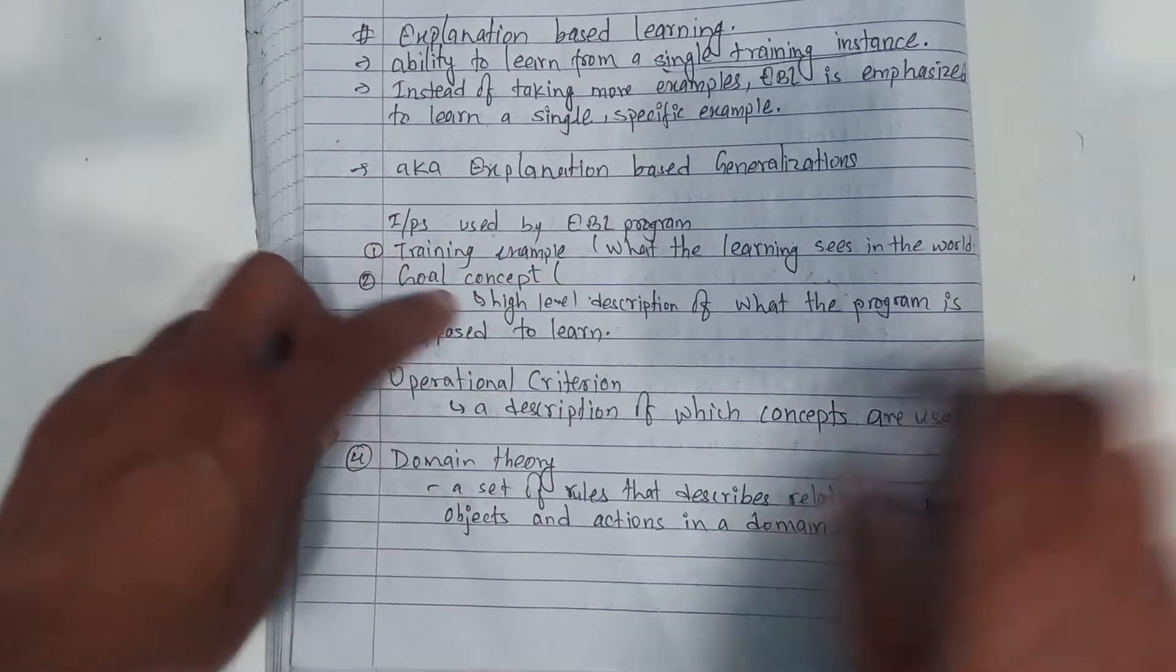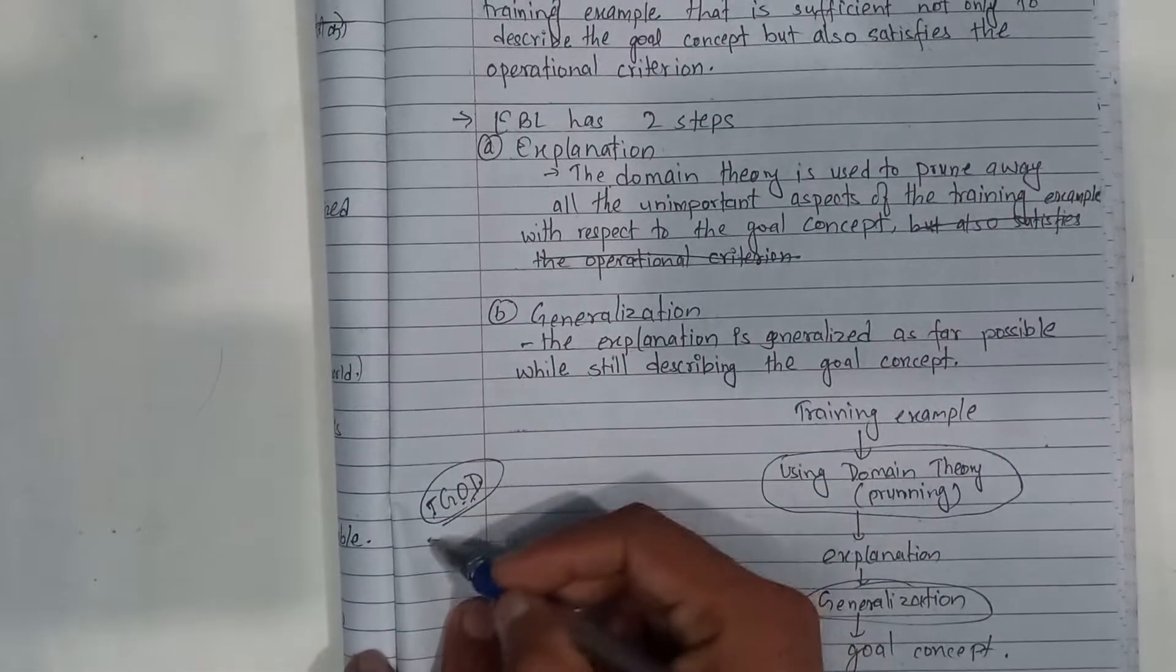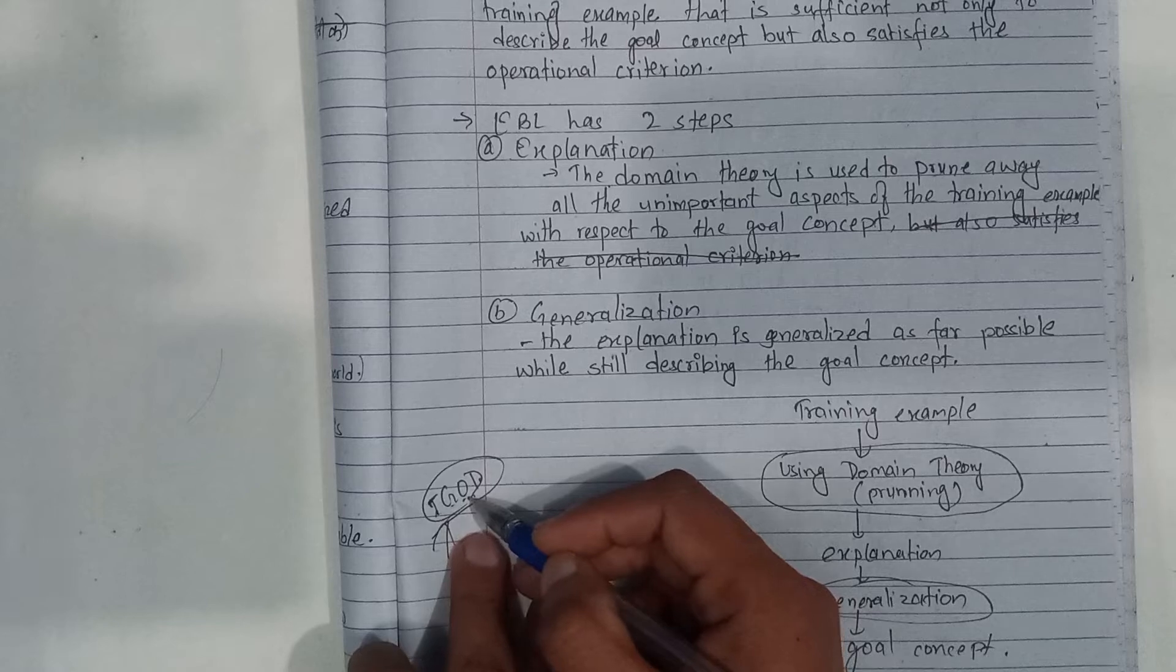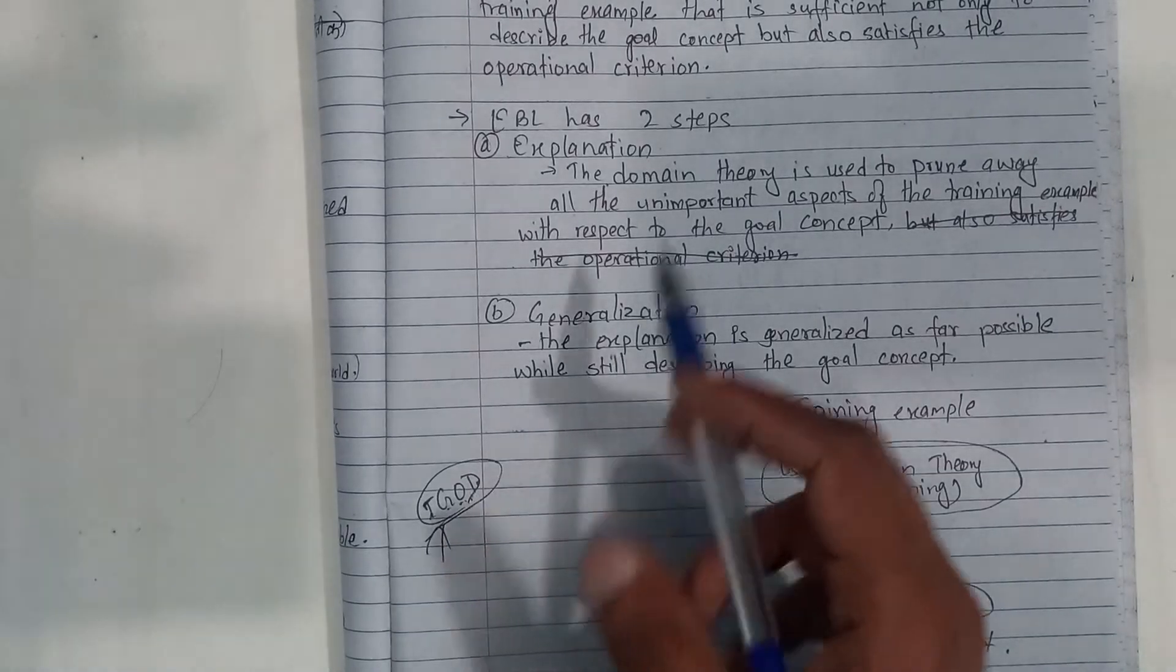Now, you can find the training example. Now, training example, I'll give you some knowledge. So, this is the training example. The goal concept. Operational criteria. And domain theory.